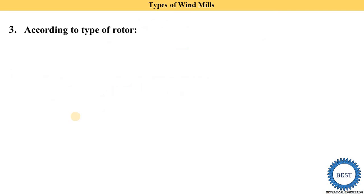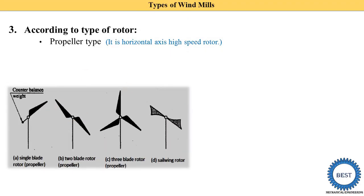The third classification is according to types of rotor — which type of rotor is used. The first is the propeller type, which is used in horizontal axis high-speed rotors. In this diagram you can see the propeller type, which is further classified as single blade, two blades, three blades, or swelling types. These will be discussed in detail when we study horizontal axis wind turbines.